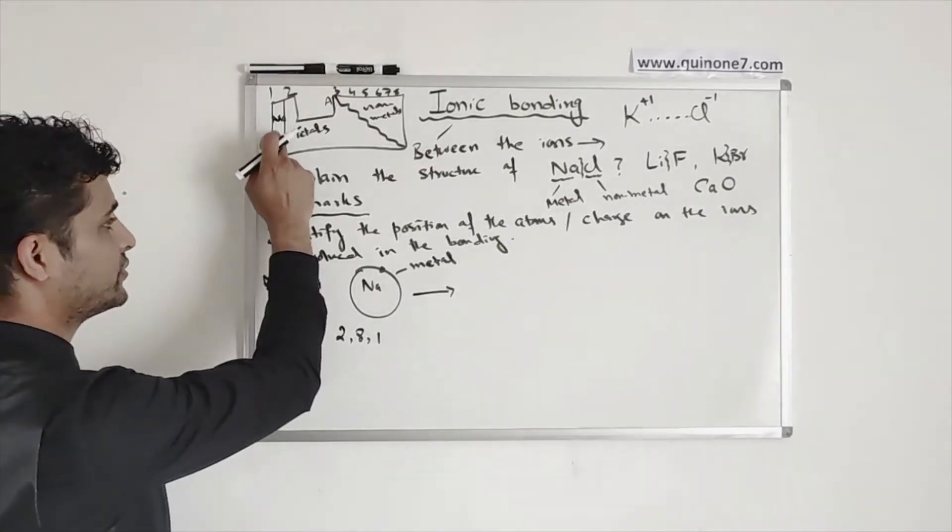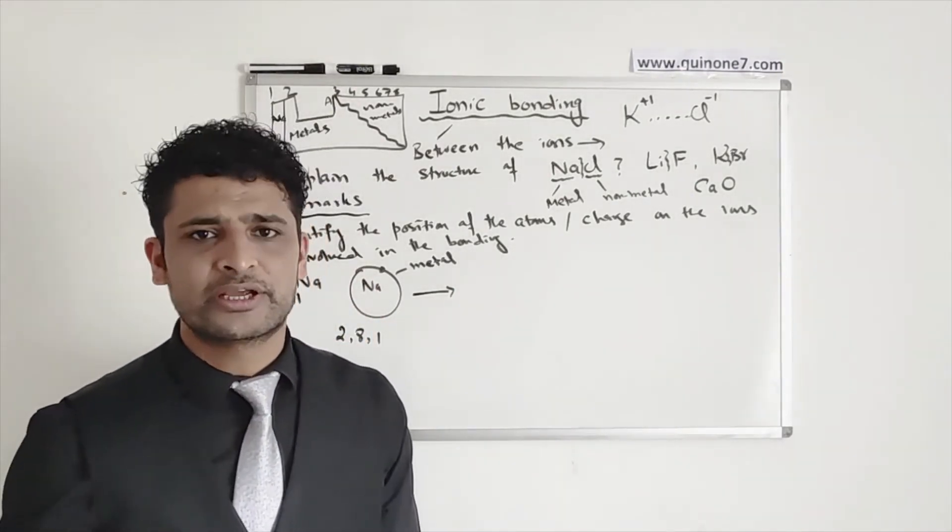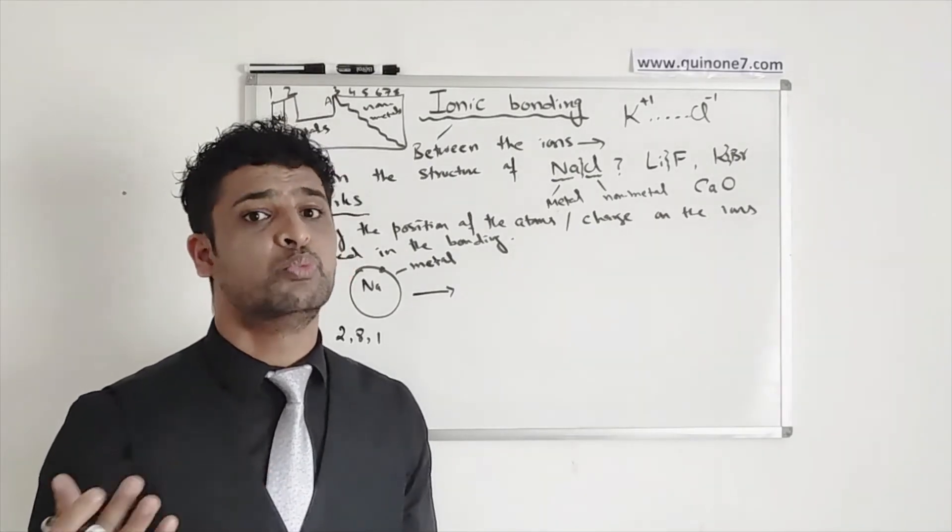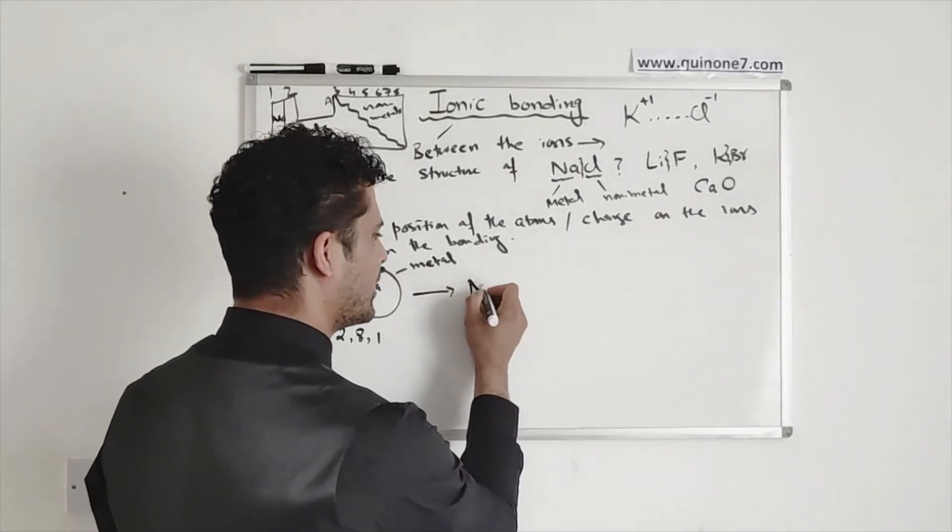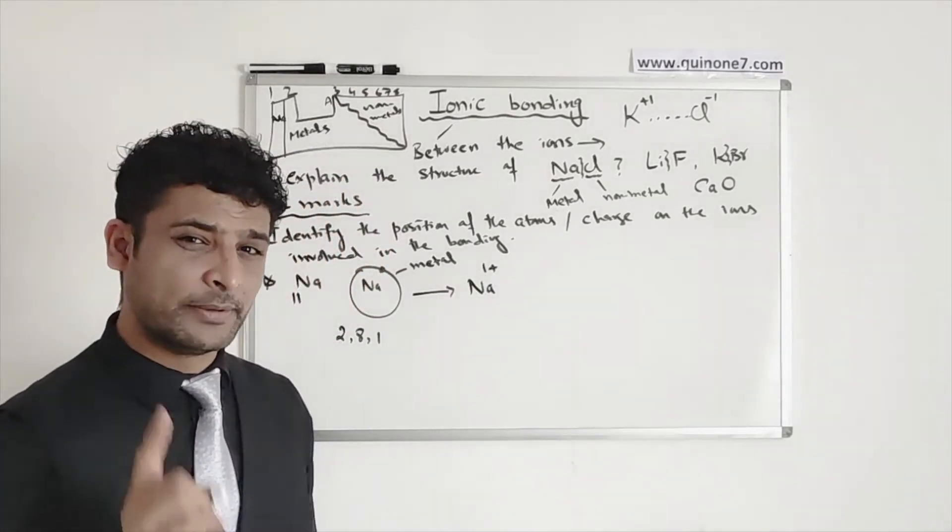Now, because it belongs to the first group, it will have one electron in the outer shell, so it will lose one electron. So anything in chemistry loses one electron will become a plus 1 ion. So the charge will be plus 1.